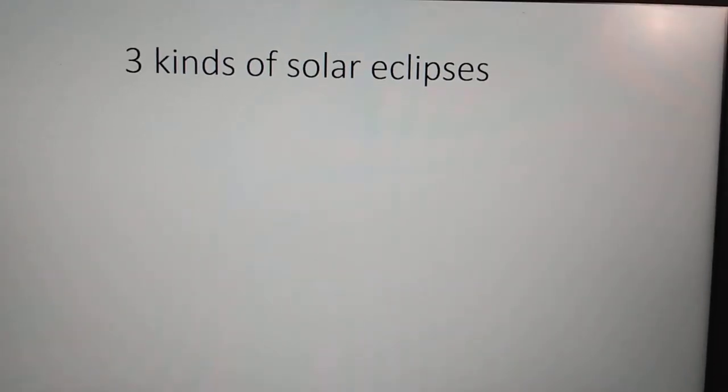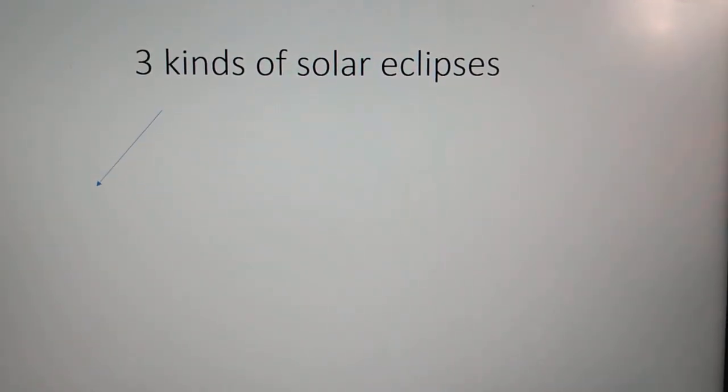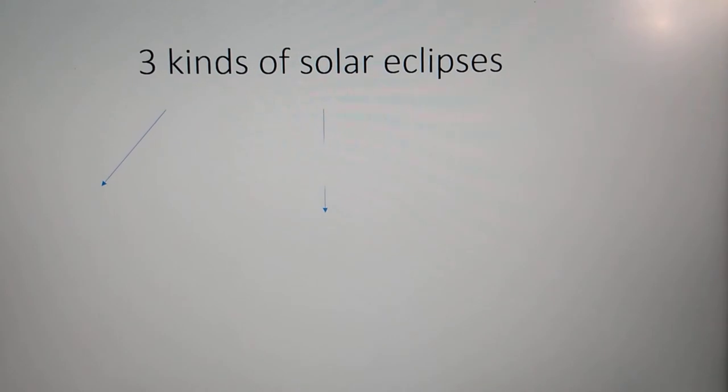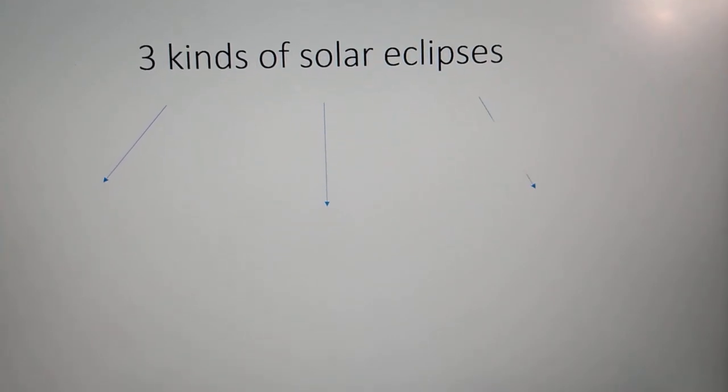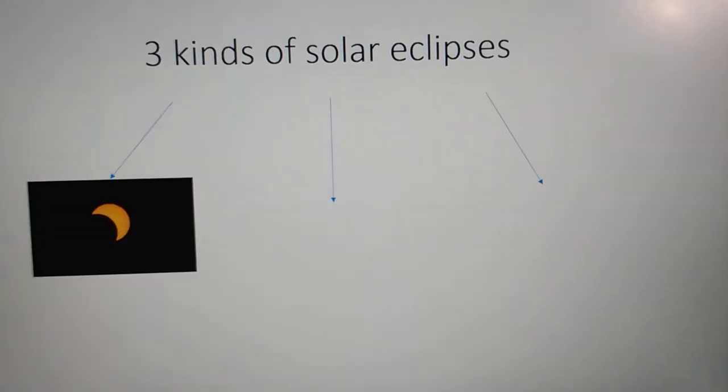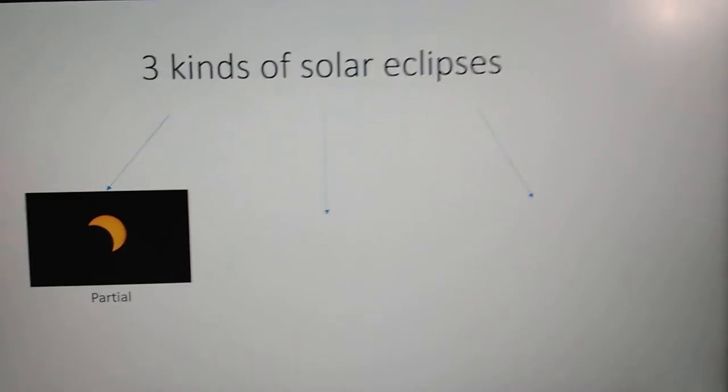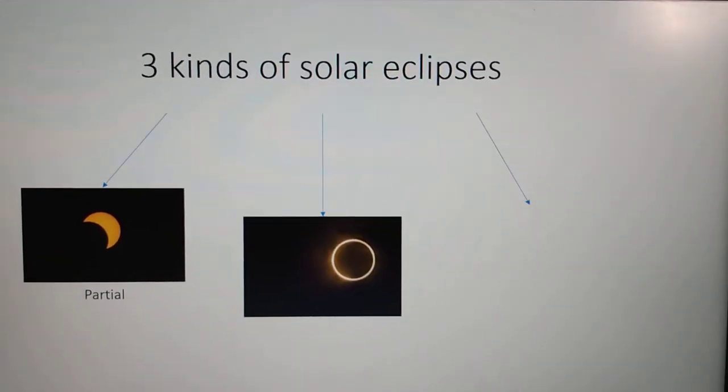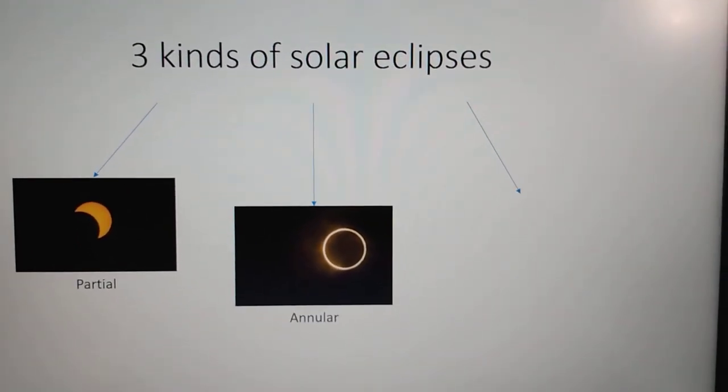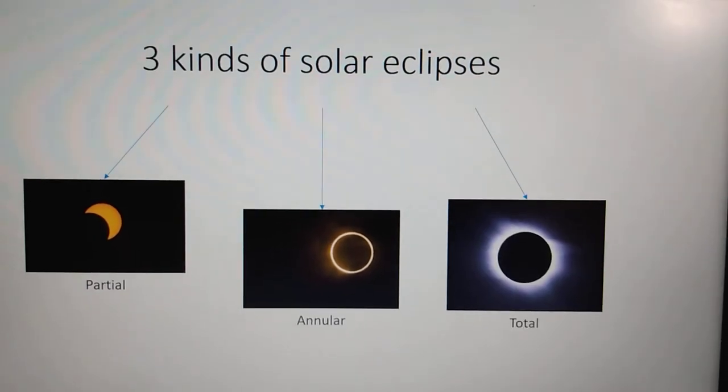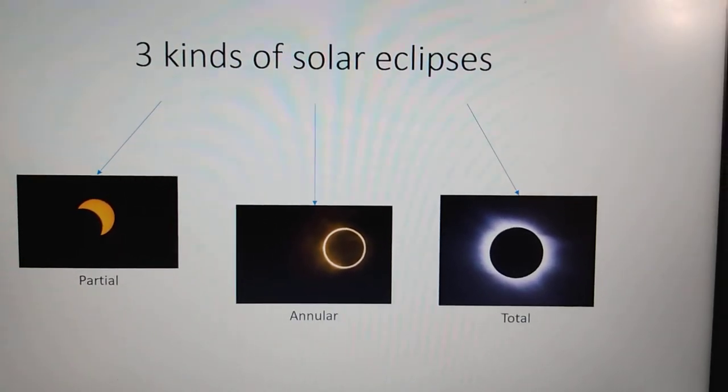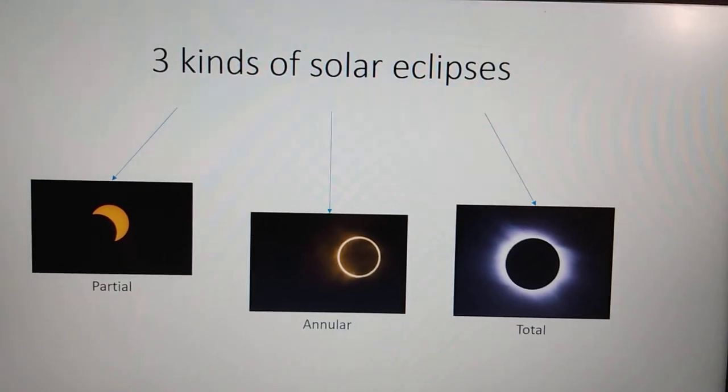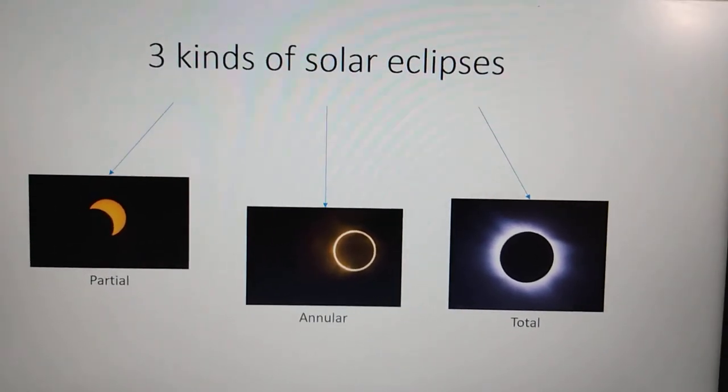So there are three kinds of solar eclipses. There's a partial eclipse, an annular eclipse, and a total eclipse. These next three slides will go into each of them in more detail.